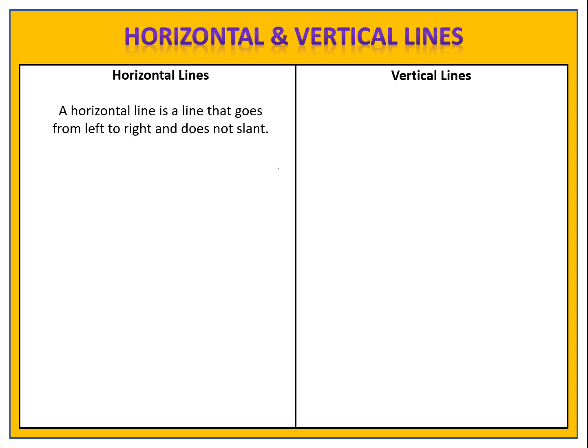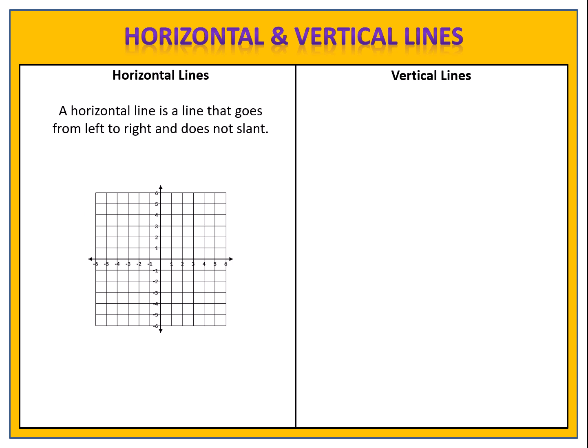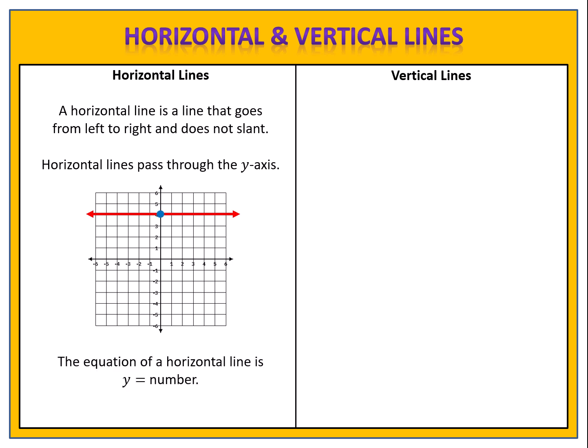A horizontal line is a line that goes from left to right and does not slant. The graph of a horizontal line passes through the y-axis, and the equation of a horizontal line is y equals a number. This particular graph passes through the y-axis at 4, so the equation of the line is y equals 4.